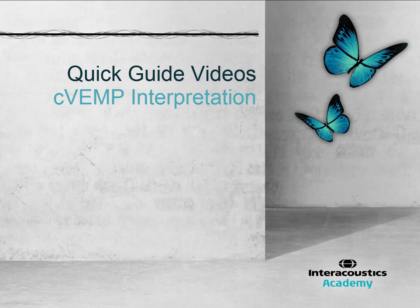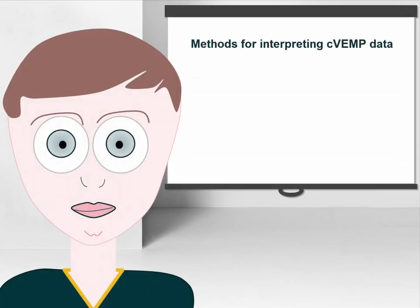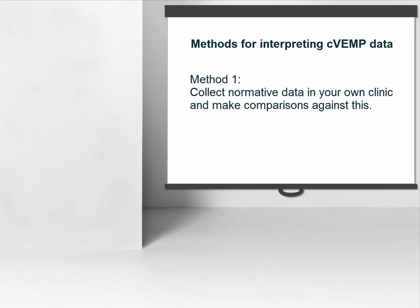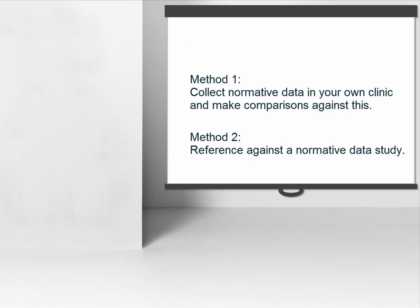This quick guide video provides an overview of how to interpret a CVEMP recording. Different clinicians have different preferences on how to interpret the data obtained from CVEMP recordings. Some like to collect their own normative data from a cohort of individuals with normal vestibular function and compare the clinical results against this data, whereas others prefer to interpret the CVEMP data against published data from normative studies.